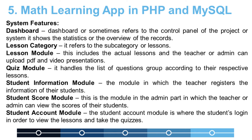System Features: Dashboard — the control panel of the project showing statistics and an overview of records. Lesson Category — refers to subcategories or lessons. Lesson Module — includes the actual lessons, and the teacher or admin can upload PDF and video presentations. Quiz Module — handles the list of questions grouped according to their respective lessons.